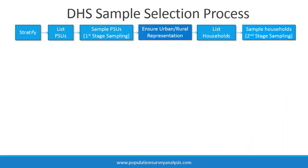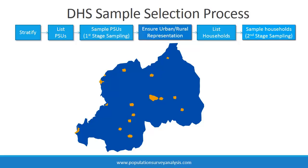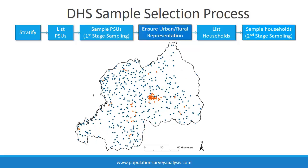The next step is to check how many PSUs were selected in urban versus rural areas across the national sample. Urban and rural populations tend to be different in terms of their demographic and health characteristics, so it's important to be able to summarize the national statistics in these two subpopulations. In low-income countries like Rwanda, the proportion of the national population living in urban areas is small, so the total urban sample might not provide sufficient sample size to make urban estimates. Therefore, the survey implementers oversample in urban areas.